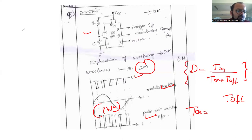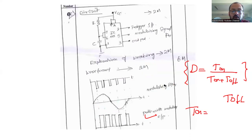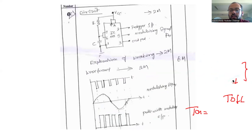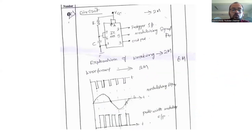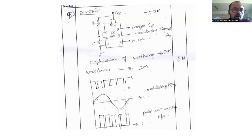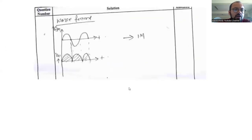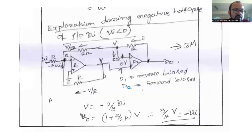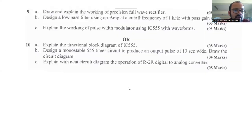In digital electronics, we use a microcontroller for PWM. Present whatever you know in a better manner and try to mention how you are generating the PWM. Question number 9c is clear.